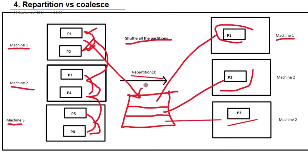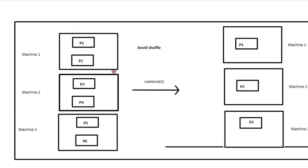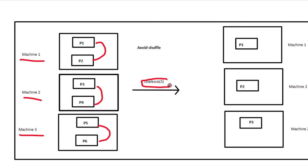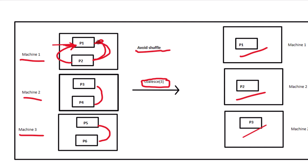Now let's understand coalesce. The setup is the same — machine one, two, and three with partitions one and two in machine one, three and four in machine two, and five and six in machine three. Coalesce will always try to avoid the shuffle. In the output we get three partitions. Partition one remains the same with no change, and partition two's data merges into partition one — so there is minimal shuffle.